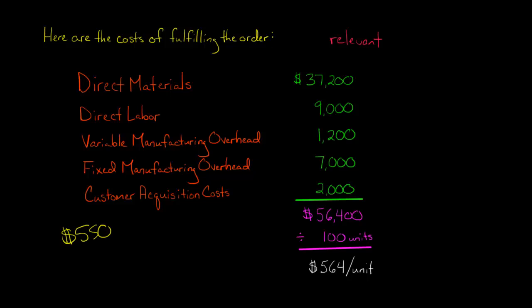You say, which costs are relevant? Which ones are going to be the incremental costs of fulfilling this order? Let's say that take direct materials. If we say no to this order, are we going to incur $37,200 of direct materials? No, these costs are relevant, the materials, because we're only going to incur that if we decide to make those strollers for them. This is the cost of fulfilling this order. The direct labor, the variable overhead, because it's variable, it's based on the activity level. So if we fulfill the order, we're going to incur these costs.